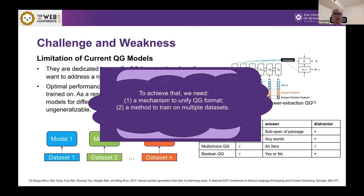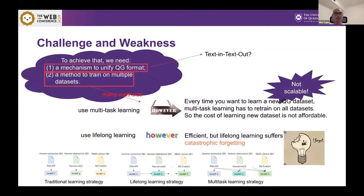First is we need a mechanism to unify QG format and another thing we need to do is find a method to train on multiple datasets. For the first thing, we can use text-in, text-out mechanism which is very commonly used in recent years.